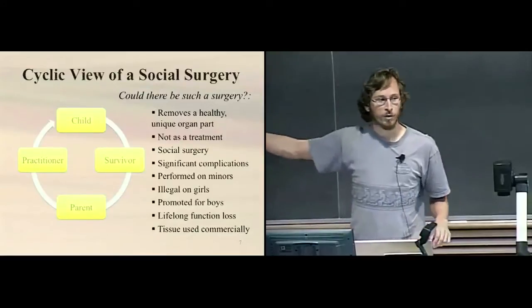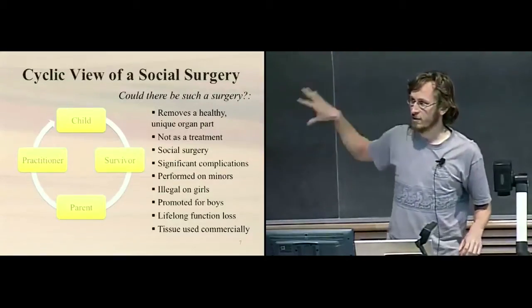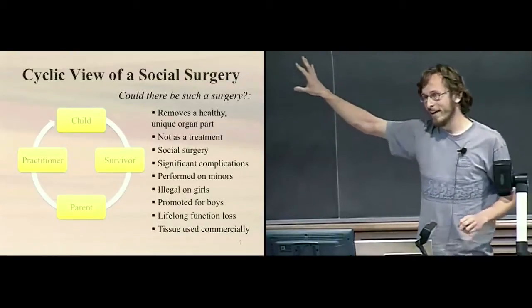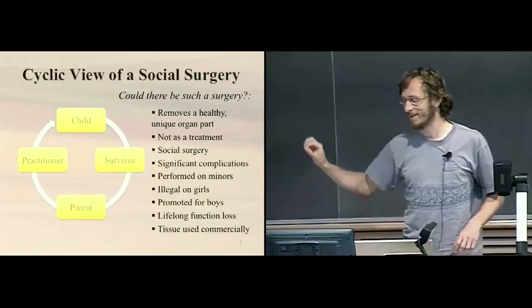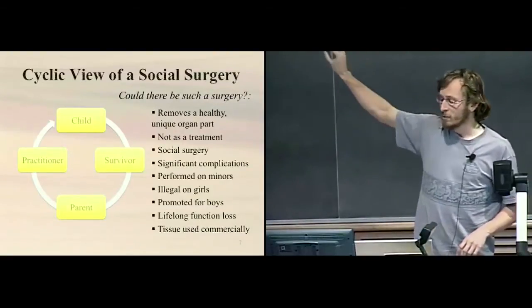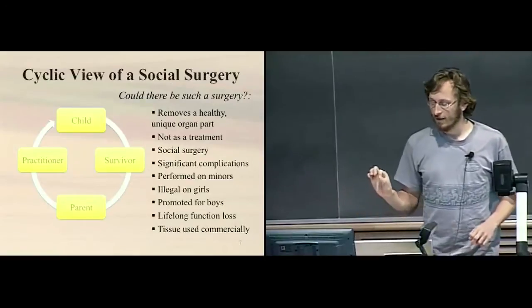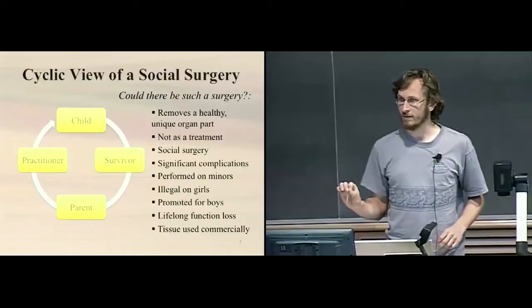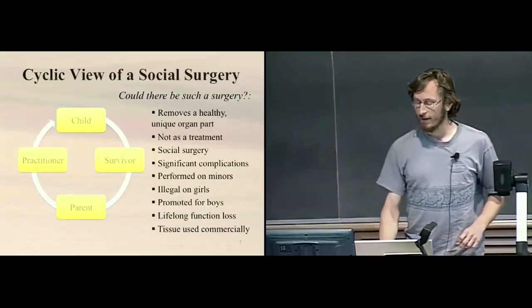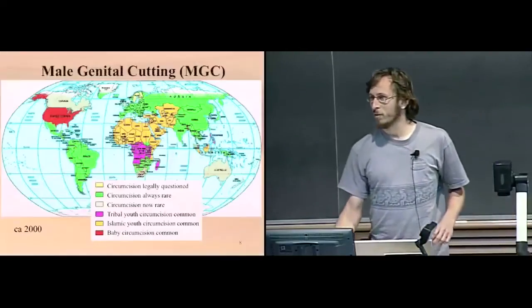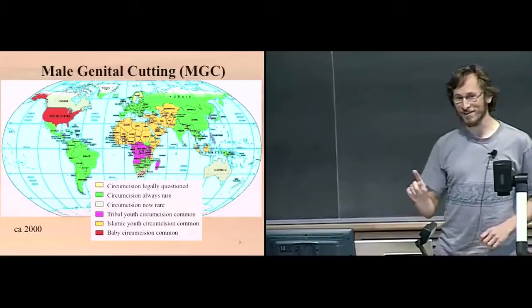I'm going to propose that circumcision is this cyclical process in our culture where we do it to children, they grow up, they become adult survivors, some of those people become parents and practitioners engage them in order to perform this surgery on their children, which unlike any other surgery I'm aware of in U.S. hospitals, it removes a healthy unique organ part, actually with the exception of intersex genital modification, which it bears a lot of resemblance to in my mind. It removes a healthy part of the body. It's not used as a treatment. Doctors don't think they're treating the children. They know that it's a social surgery they're performing. It has significant complications. It's performed on minors who can't give consent. It's illegal. It's actually a federal felony to perform it on girls, but it's actually encouraged to perform on boys. It results in lifelong function loss, and the tissue is then used commercially. So, just a little context piece. I hear you. Believe me, and I will show you evidence for that. I won't make such a radical claim without proving it.